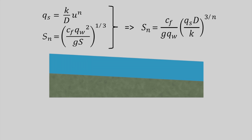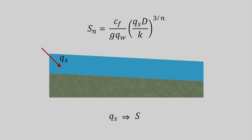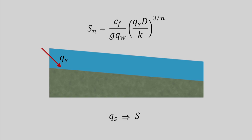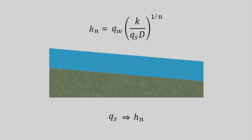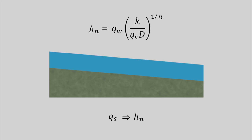Combining these two equations, we arrive at an expression of the equilibrium or normal slope. This is the slope which enables the river to transport the sediment coming from upstream. If, for example, the amount of sediment delivered to the river through landslides, bank erosion, or bed degradation increases, the bed slope will increase to enable the river to transport the larger amount of sediment downstream. At the same time, if the sediment supply and slope increase, the flow depth will decrease. The study of such changes in bed elevation is called river morphodynamics.